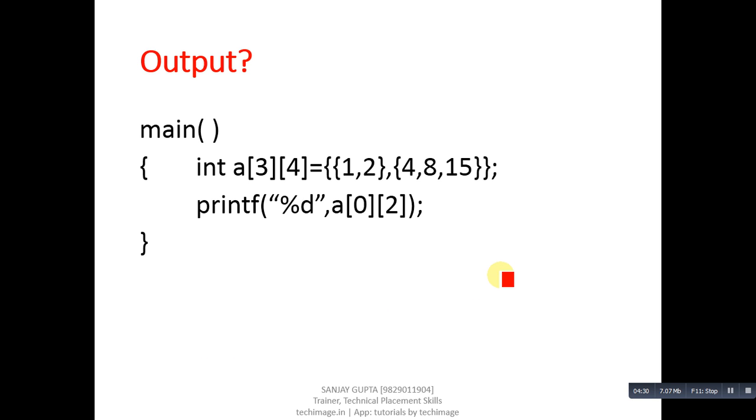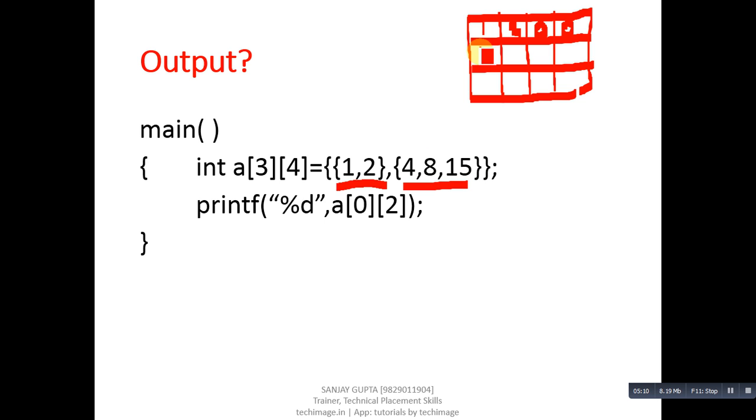This is another code segment. Here three by four matrix is required, so first I am drawing a three by four matrix. This is first row, then second and third row, and it will be divided into four columns. This assignment will be for first row: one and two. One and two, remaining will contain zero. Then these values will assign into second row: four, eight, and fifteen. This is four, eight, and fifteen, remaining will be zero. And we have not initialized third row, so all values become zero. This is initialization of this 2D array.